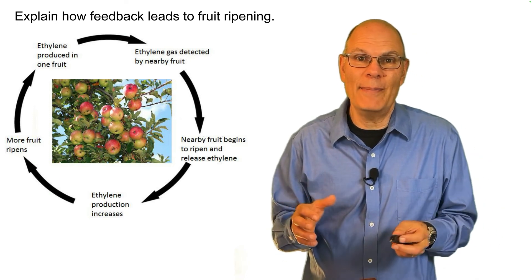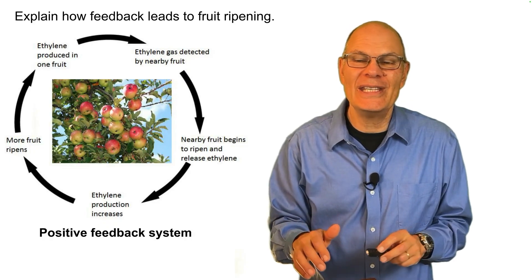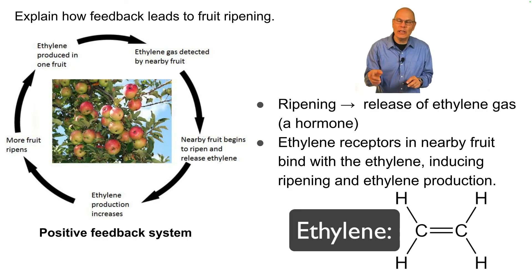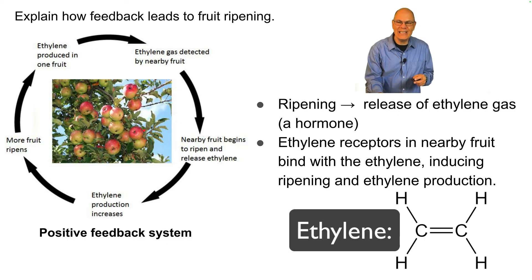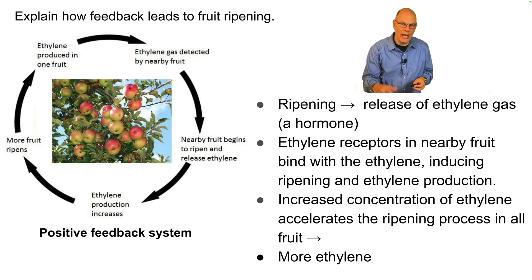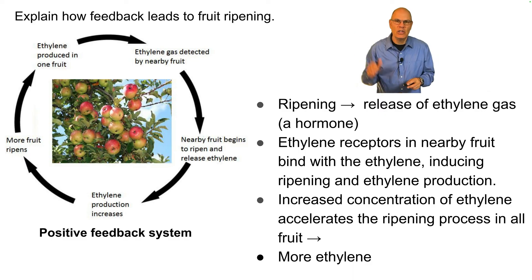Fruit ripening is another positive feedback system. Ripening fruit releases a gaseous hormone called ethylene. Ethylene receptors in nearby fruit pick up the ethylene, inducing additional ripening and more ethylene production. The increased concentration of ethylene accelerates ripening across all the fruit, leading to even more ethylene — until all the fruit ripens. In fruit shipping, this is prevented by pumping carbon dioxide into storage containers, which suppresses the ethylene and allows fruit to be shipped long distances.